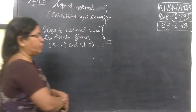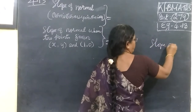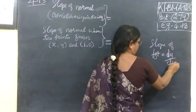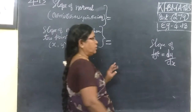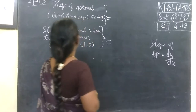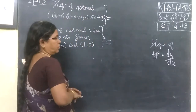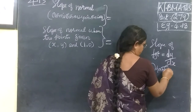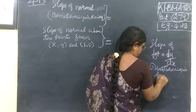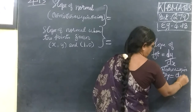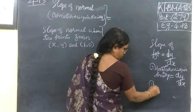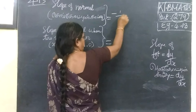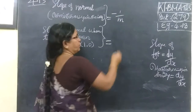Now, slope of normal. We know slope of tangent. Slope of tangent equals dy/dx. This is the case of the curve. This is the case of the normal. The normal passes through the point, so slope of normal is -dx/dy.